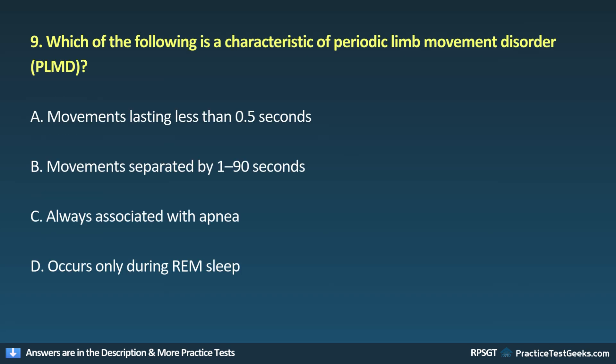Question 9: Which of the following is a characteristic of periodic limb movement disorder (PLMD)? A. Movements lasting less than 0.5 seconds, B. Movements separated by 1 to 90 seconds, C. Always associated with apnea, D. Occurs only during REM sleep.